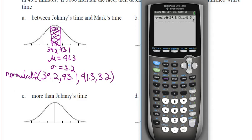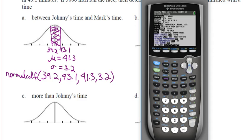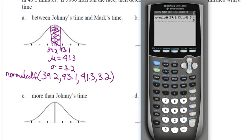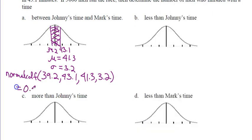Hit enter. That gives us a probability of about 0.457... That's what normal CDF gives. But there are 3,000 men, so we're going to take the output from normal CDF — 0.457... — times 3,000.